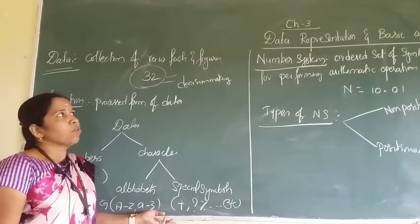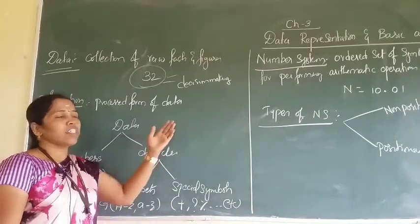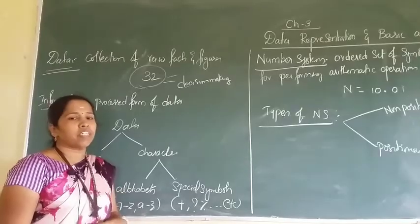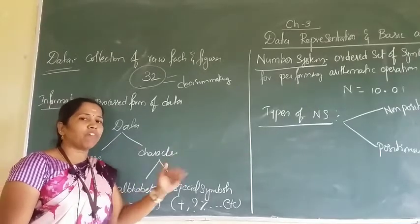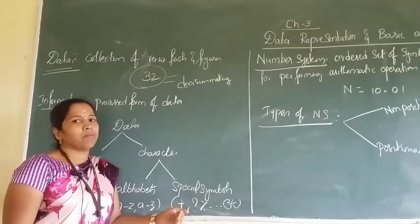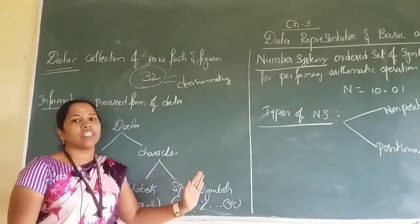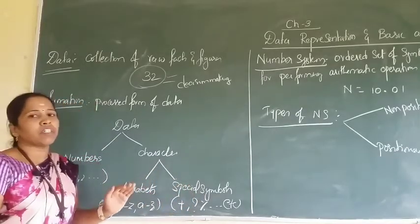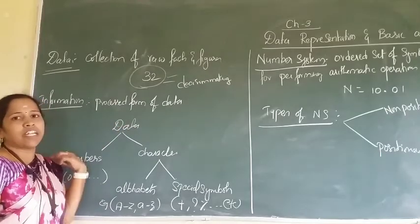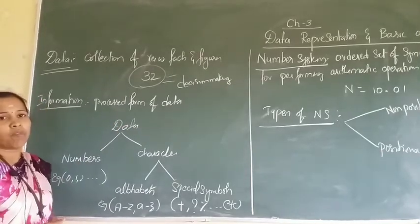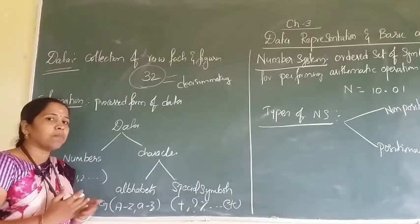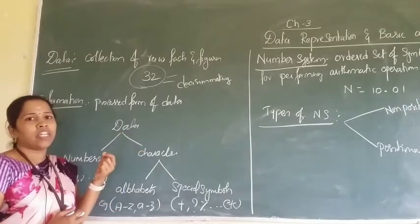Today I am going to explain the third chapter, that is data representation and basic arithmetic. We have already studied these concepts in first semester in digital electronics subject. The same thing I am just revising here, along with some additional concepts. First, we will see what is data. Data is nothing but a collection of raw facts.